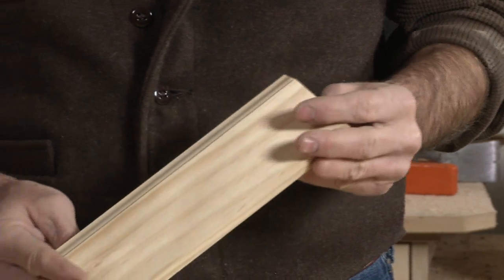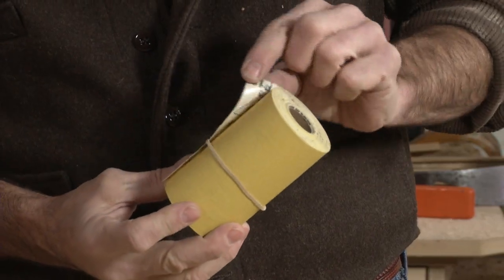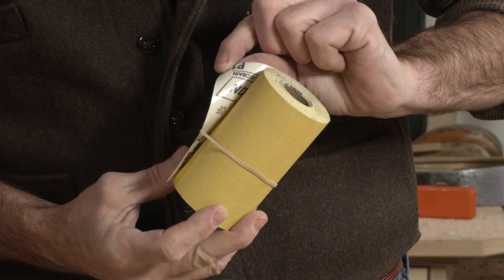First, he gets a length of the baseboard that he's using. This one's about nine inches long. Then, he gets some adhesive-backed sandpaper, sticky back. This stuff is made by Norton. This is 180 grit.